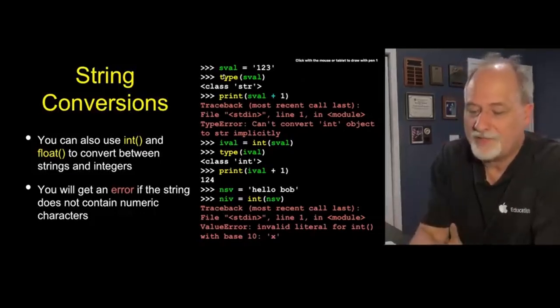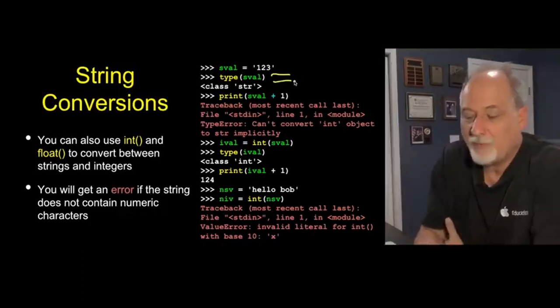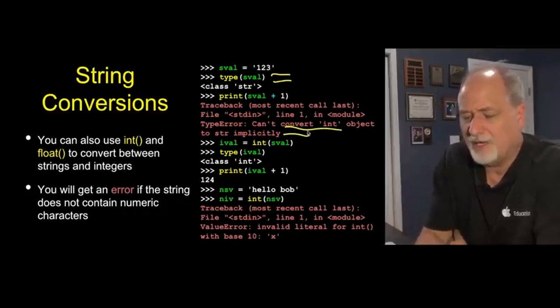We say what is the type of this? It's a string. We say let's add one to it. And it says can't convert int to string, so that blows up, right? Because this is a string. It looks to both sides. String plus an integer, not good.